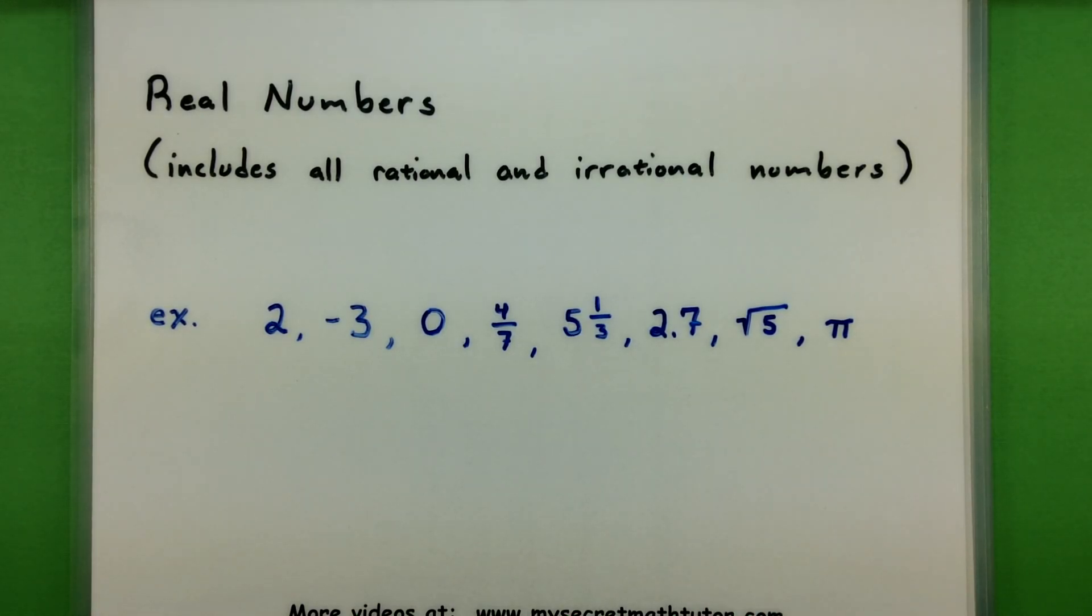And lastly, it contains all of our irrational numbers. So things like the square root of 5 or pi, yep, those are also considered real numbers. So you can see we have a variety of different groups here that you can really take a number and classify it in.